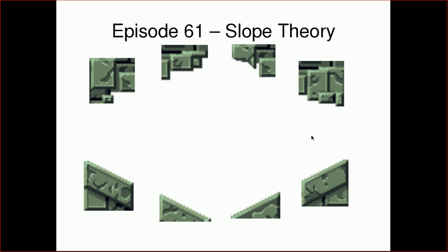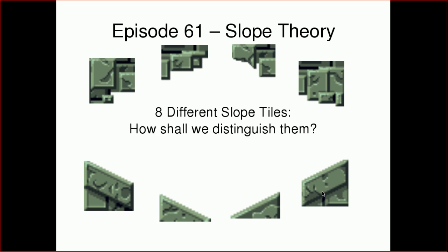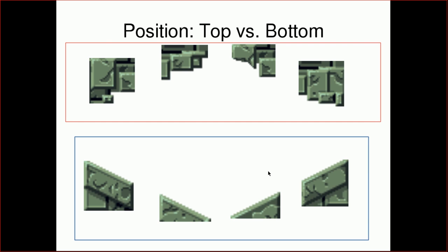Cave Story has eight different slope types. The first thing I want to talk about is how are we going to distinguish them? We could just say this is type 0, 1, 2, 3 — but that's useless and really makes things more difficult to code. So let's talk about some names that would help us understand the code better.